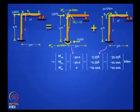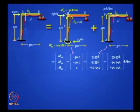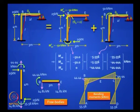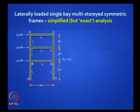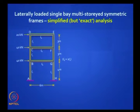You can also use moment distribution to distribute this moment in proportion to the two relative stiffnesses. What is the stiffness of AB? It is a cantilever — it is EI/L. And what is the stiffness for BE? It is 3EI/L. You can work it out either way and get the answer. Draw the free bodies, get the final moment diagram. This is easy to do. Now let us apply this to a really difficult problem: a three-storied symmetric frame. We have done the same problem by approximate analysis; let us do it exactly now using the slope deflection or moment distribution method.